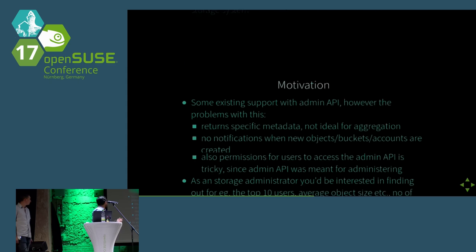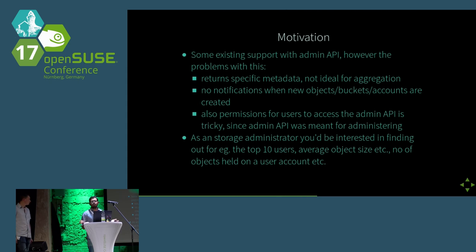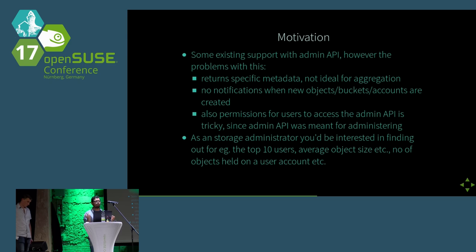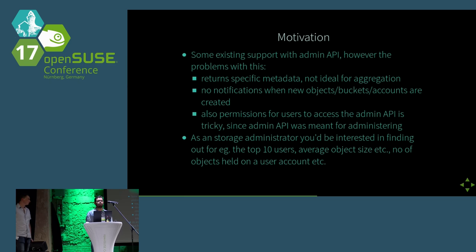We already have some existing support in terms of an admin ops REST API, but there are problems: you can query for specific metadata with the admin ops API only if you know what you're looking for. There is also no notification when new objects, buckets, or users are created, so you'd have to constantly poll the Rados Gateway. Additionally, it would be the same publicly-facing Rados Gateway doing the metadata work, and many sites would not want that for performance reasons. This is where Elasticsearch can greatly simplify your life.